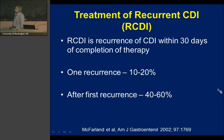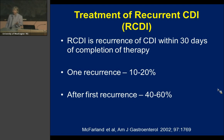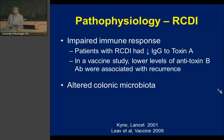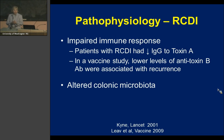Recurrent C. diff infection is defined as recurrence of infection and symptoms within 30 to 60 days of completing treatment. The chance of one recurrence is only 10-20%, but once you have that first recurrence, the risk of continued recurrences rises to 40-60%. There are two theories: impaired immune response — patients who got recurrences had lower IgG anti-toxin A levels, and in a vaccine study, resolution of recurrences correlated with improvement in anti-toxin B antibodies.